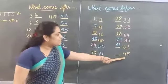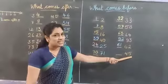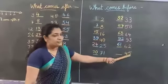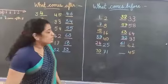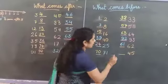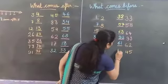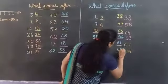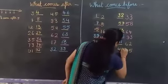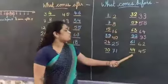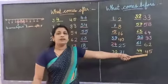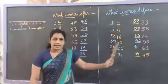And the last number — which number is this? 45. 45 ke pehle kya hai? 4, 4 — that is 44. 44 comes before 45.